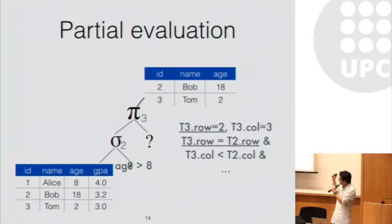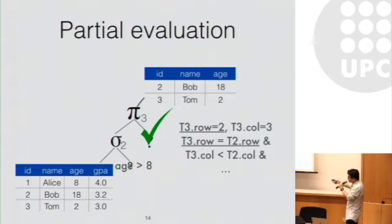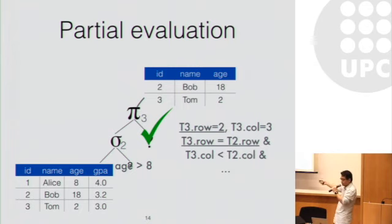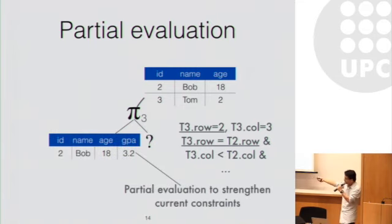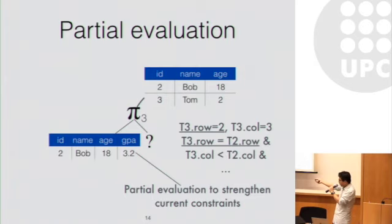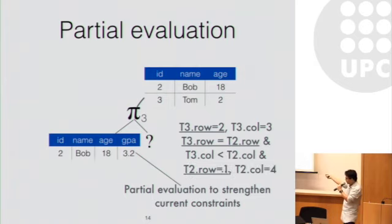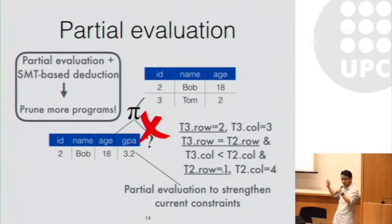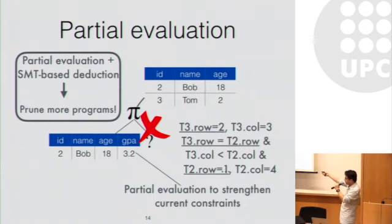But since all arguments of the selection node are now concretized, we can actually partially evaluate the result for this node and get a new table corresponding to T2, which contains one row and four columns. If we add this information to the constraint system based on the result of partial evaluation and send the formula to the SMT reasoning engine, it will now say this is unsatisfiable. This means we can reject the current partial program without filling the remaining missing arguments. The combination of partial evaluation and SMT-based deduction gives us further ability to prune the search space.